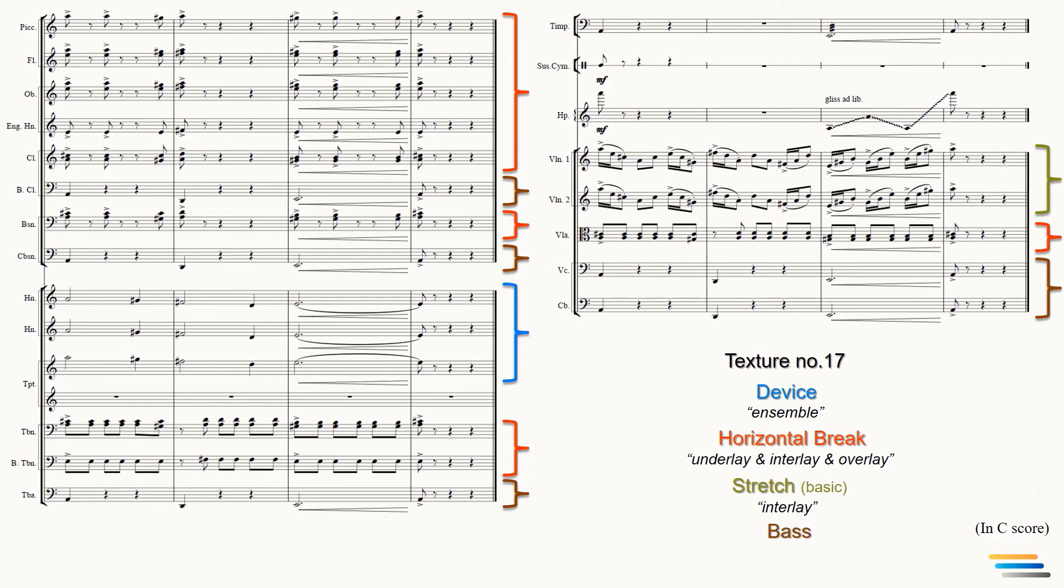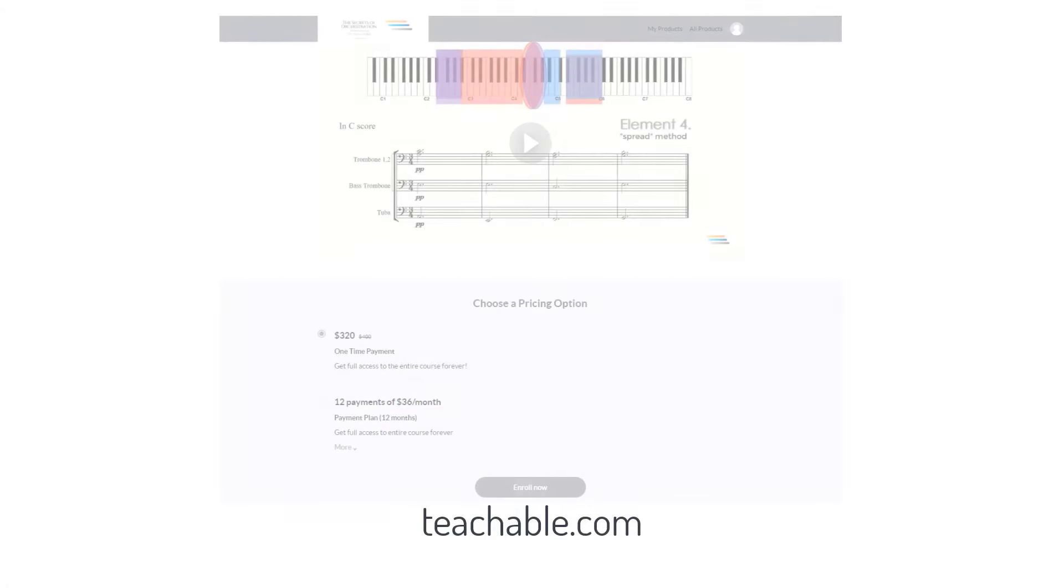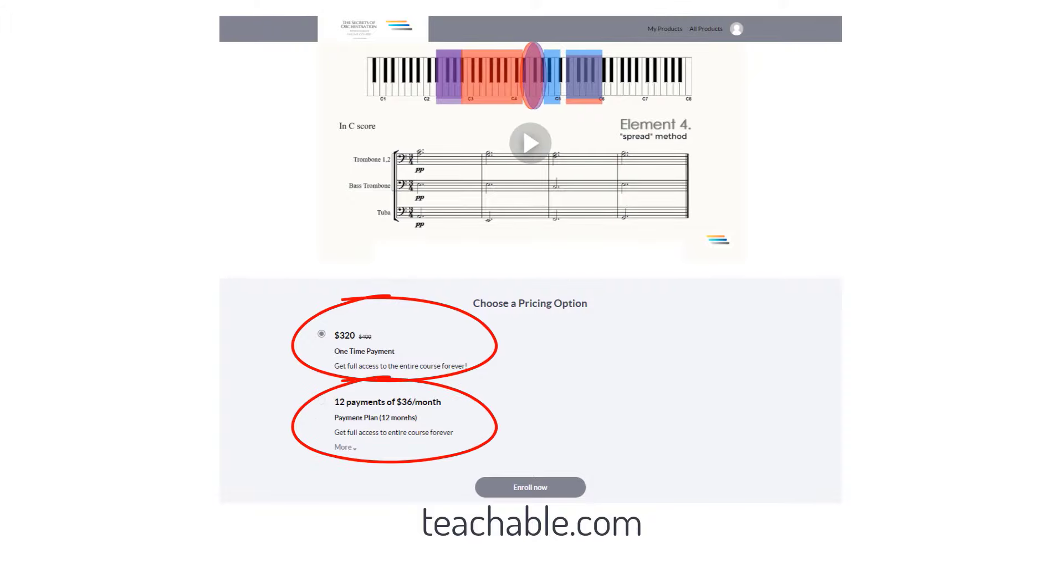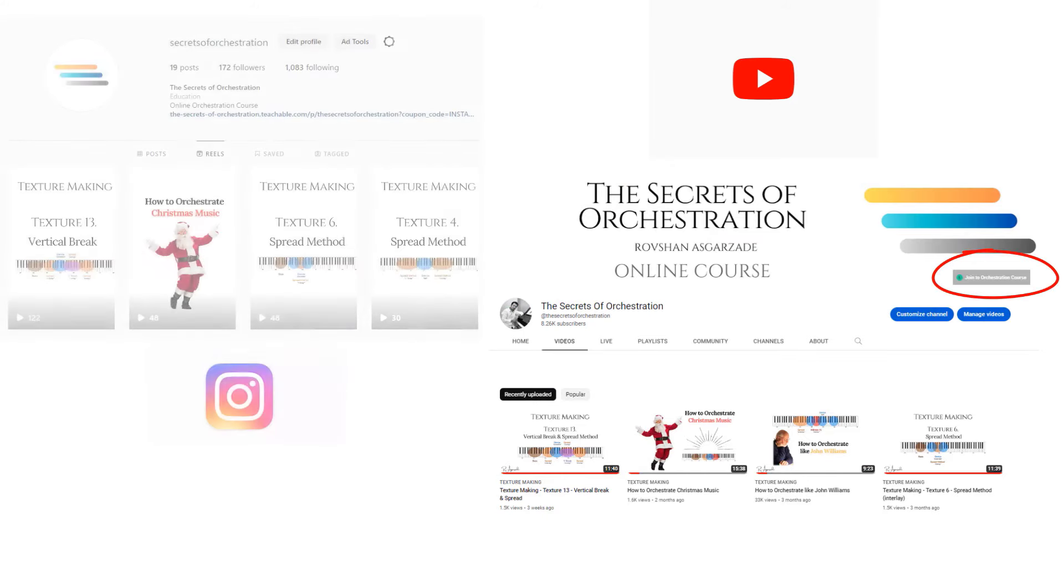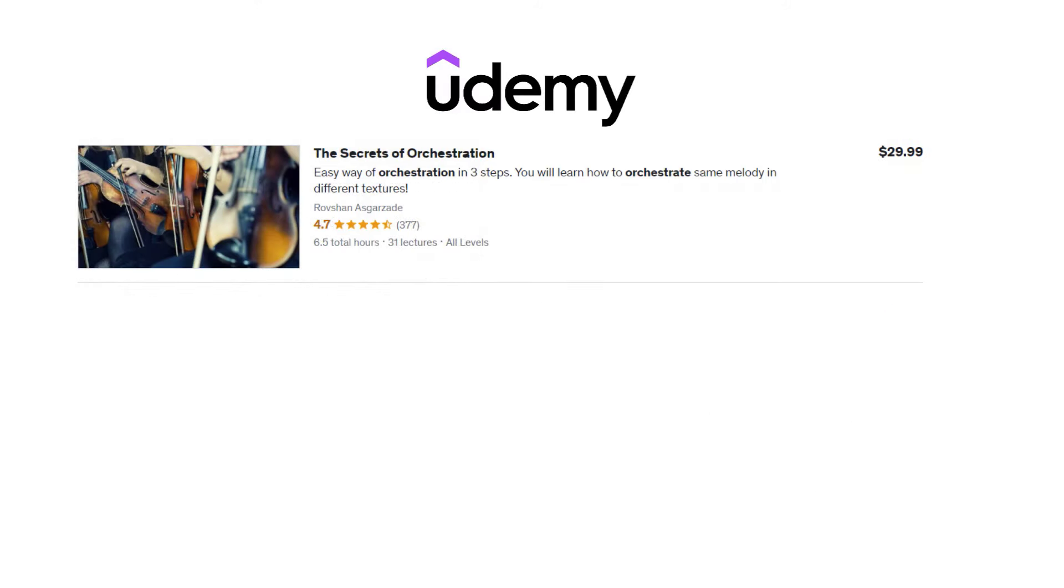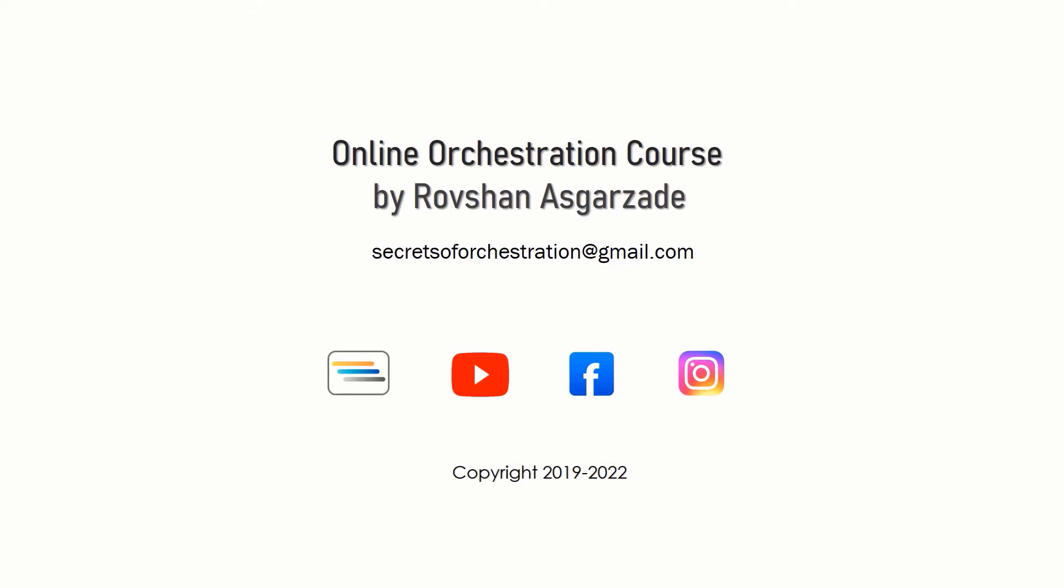If you liked this lecture and want to learn more about these methods, and create different textures of the melody, let's enroll in the course. You can choose one-time or monthly payment options. Discount coupon links are available on my YouTube and Instagram channels. If you have purchased the first edition of my course on udemy.com, you can send a request to the following email and get an extra discount. If you have any questions, don't hesitate to ask me at secretsoforchestration at gmail.com. Thanks for watching. Bye for now.